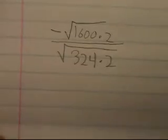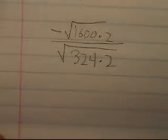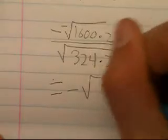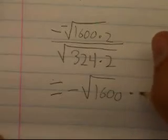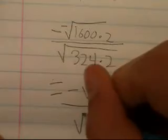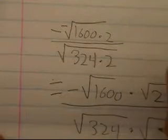Let me slide that up. After this, you can break down slightly, and you will get negative radical 1,600 times radical 2 over radical 324 times radical 2.